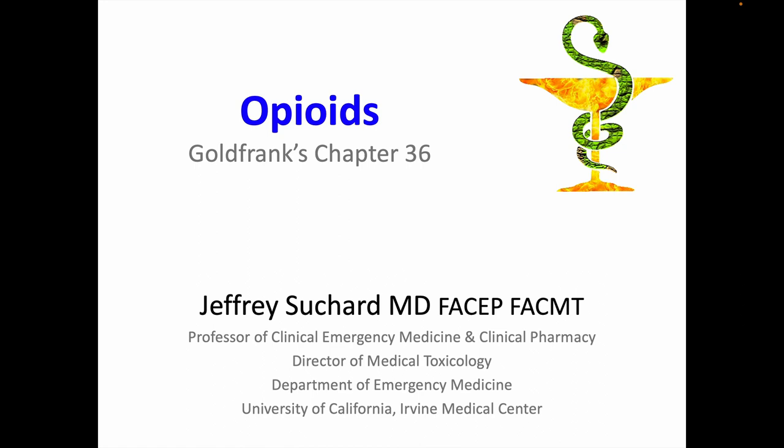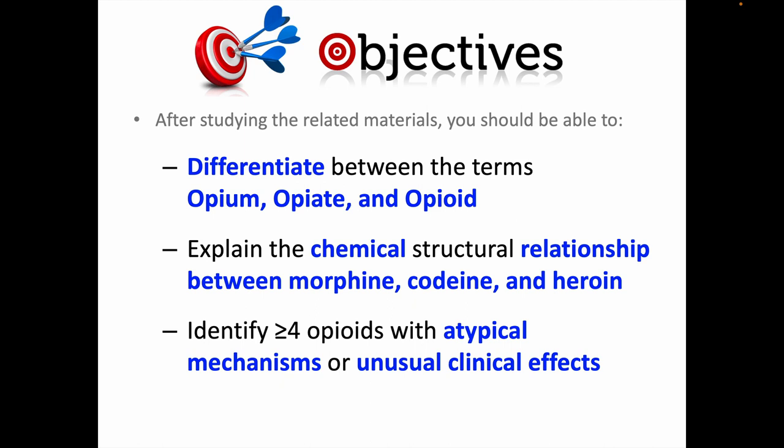The learning objectives today are that after you've read the chapter, watched this video, and studied any other supporting materials, you should be able to differentiate between the terms opium, opiate, and opioid; explain the chemical structural relationship between morphine, codeine, and heroin; and be able to identify at least four opioids that have some unique differences, atypical mechanisms or clinical effects that distinguish them from the usual suspects.